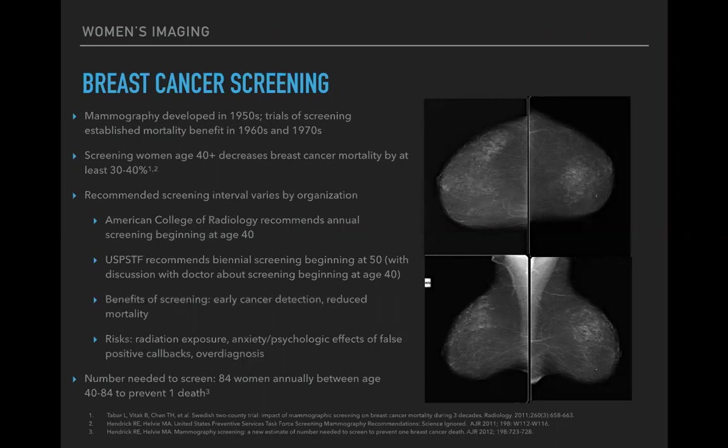The benefits of screening include early cancer detection — the earlier you detect it, the better the mortality outcome and the less morbid any treatment is. Risks include radiation exposure, anxiety, psychological effects of false positive callbacks, and the concept of over-diagnosis. The number needed to screen suggests you need to screen 84 women annually between ages 40 and 84 to prevent one death from breast cancer.